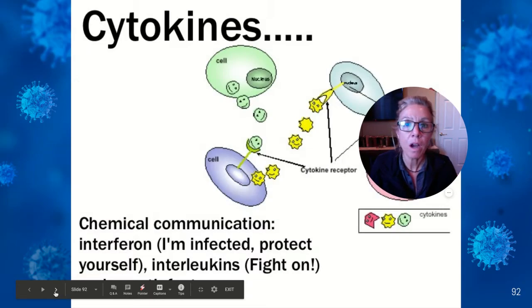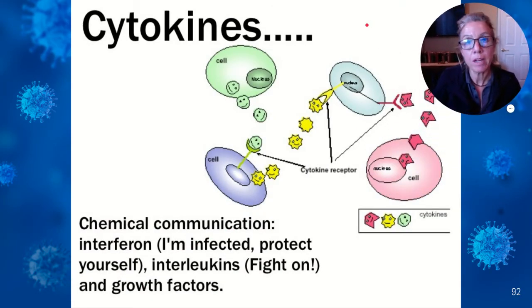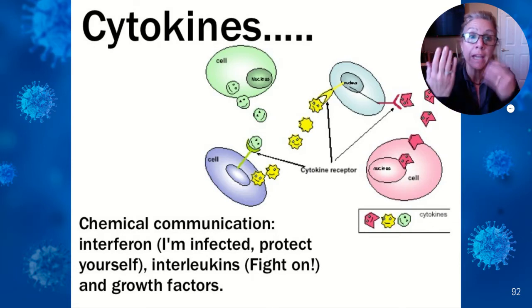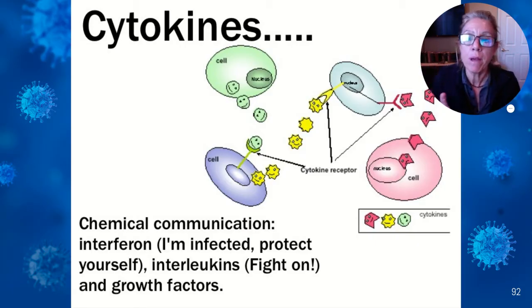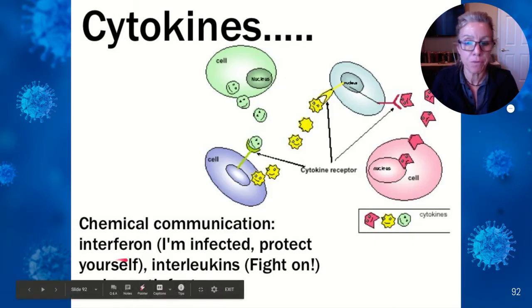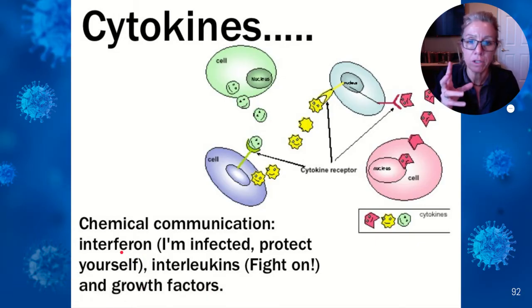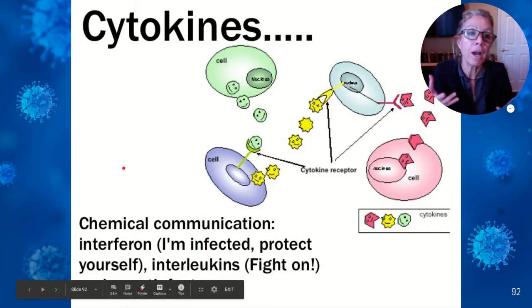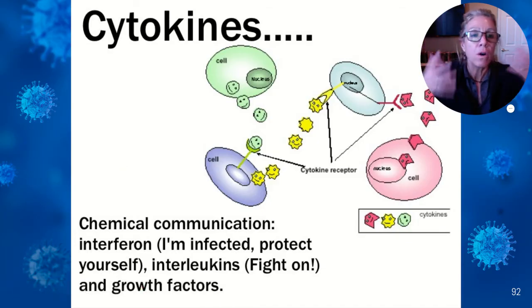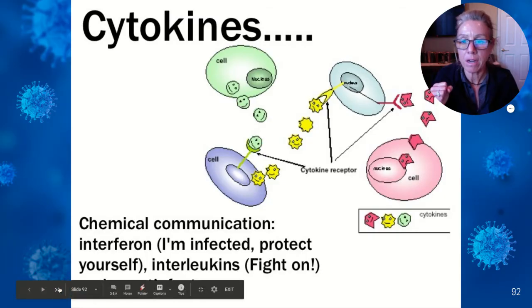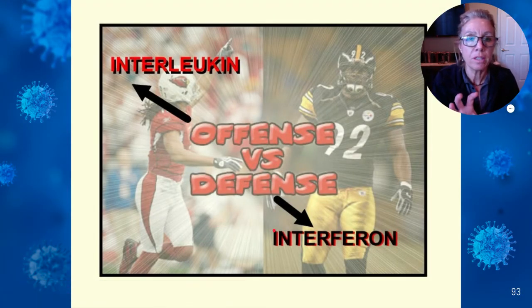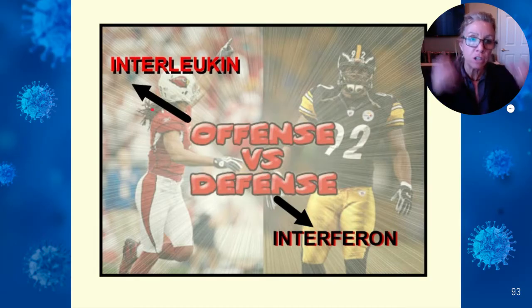Back to cytokines — we talked about this in part one. Cytokines can be used in both innate and adaptive immunity. A cytokine is a cell talking to another cell with a chemical. One of those chemicals is interferon, which says 'I'm infected, save yourself.' Interleukins are secreted by macrophages and amp up the immune cells — like all the immune cells are drinking Red Bull and eating donuts. Interleukins are like offense: let's go, let's fight. Interferons are like defense: I'm infected, let's defend ourselves and neighboring cells.